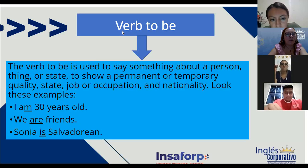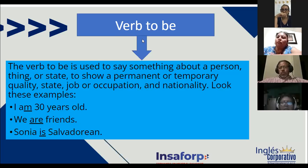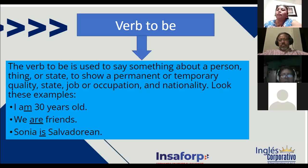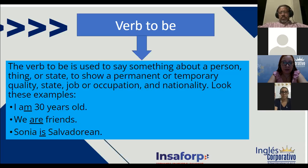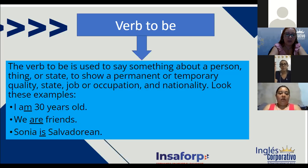Necesitamos tres voluntarios para leer estas oraciones. Walter Bonilla number one, Edgardo number two, Jacqueline Guzmán number three. Walter: 'I am thirty years old.' Correct. Edgardo: 'We are friends.' Thank you. Jacqueline: 'Sonia is Salvadorian.' Very good.